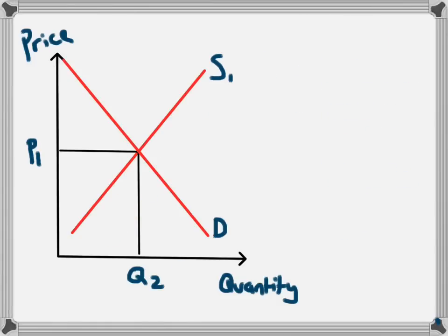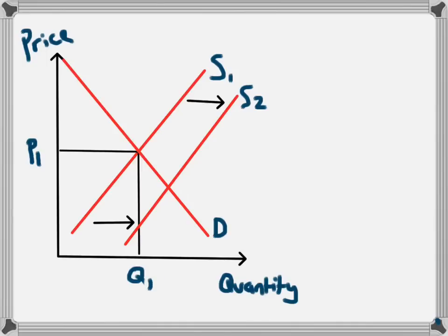We will now look at the effect of this increase in supply on the new equilibrium price and quantity. The supply curve has shifted to the right from S1 to S2. The previous equilibrium price was P1 and the quantity was Q1. Moving the supply curve from S1 to S2 leads to a change in the equilibrium: the equilibrium price falls from P1 to P2 and the quantity increases from Q1 to Q2. The increase in supply has increased the quantity of products being produced and made the product less rare, which decreases the price.